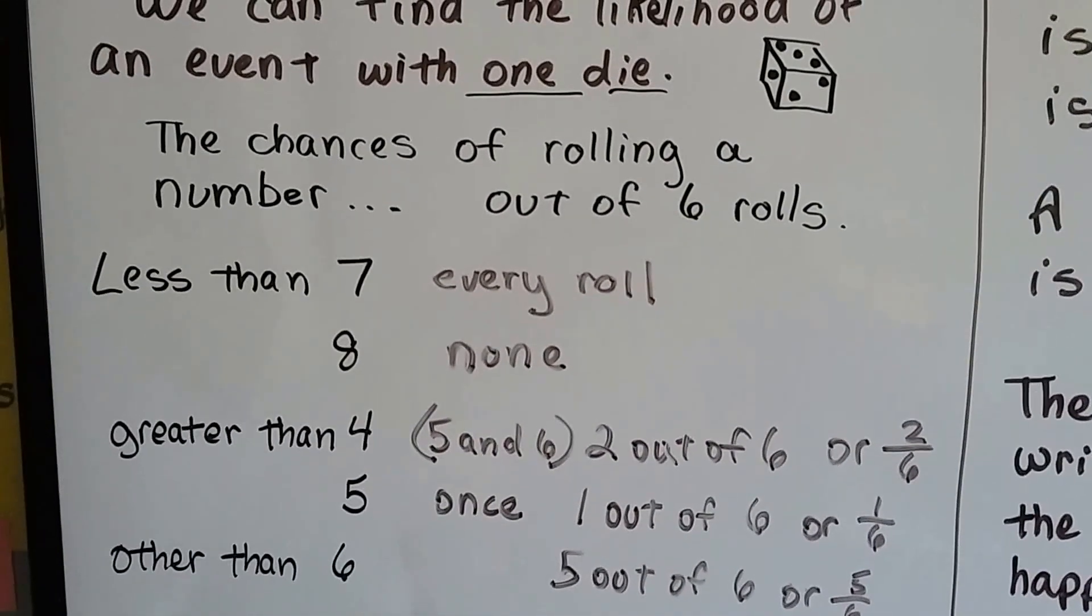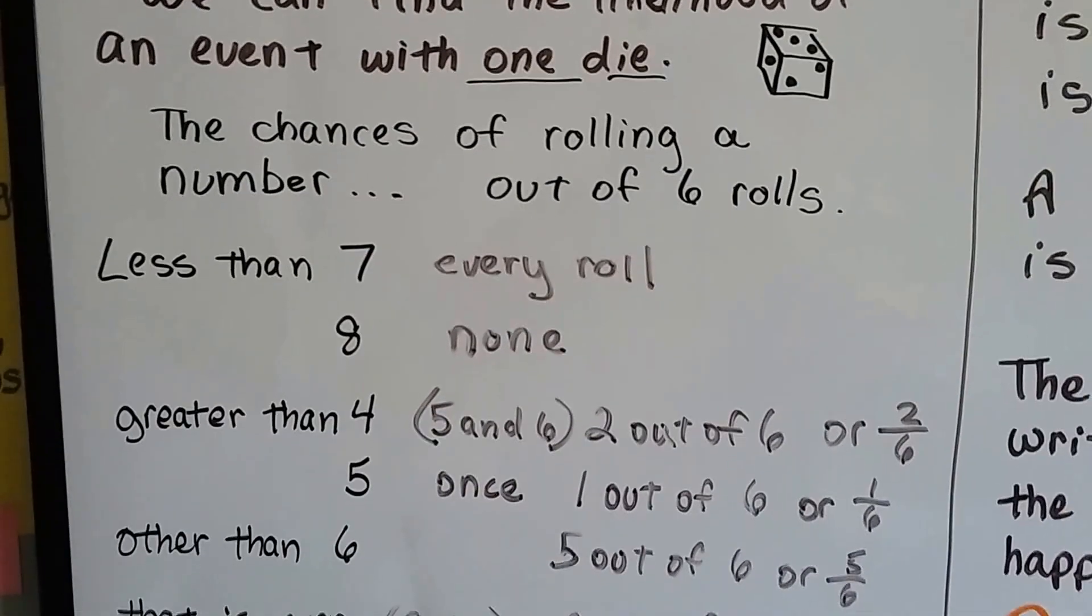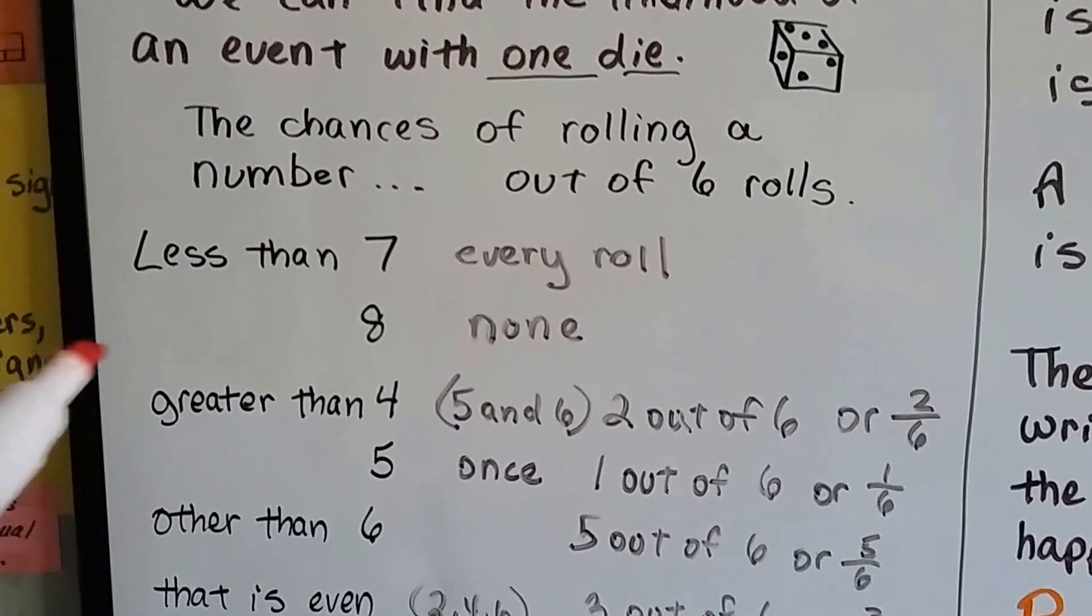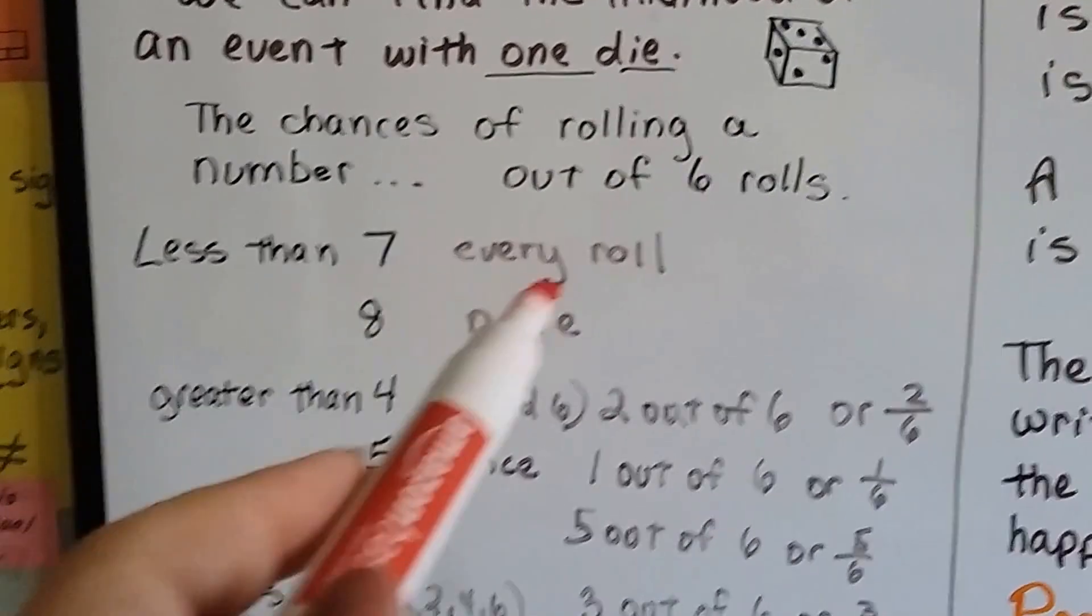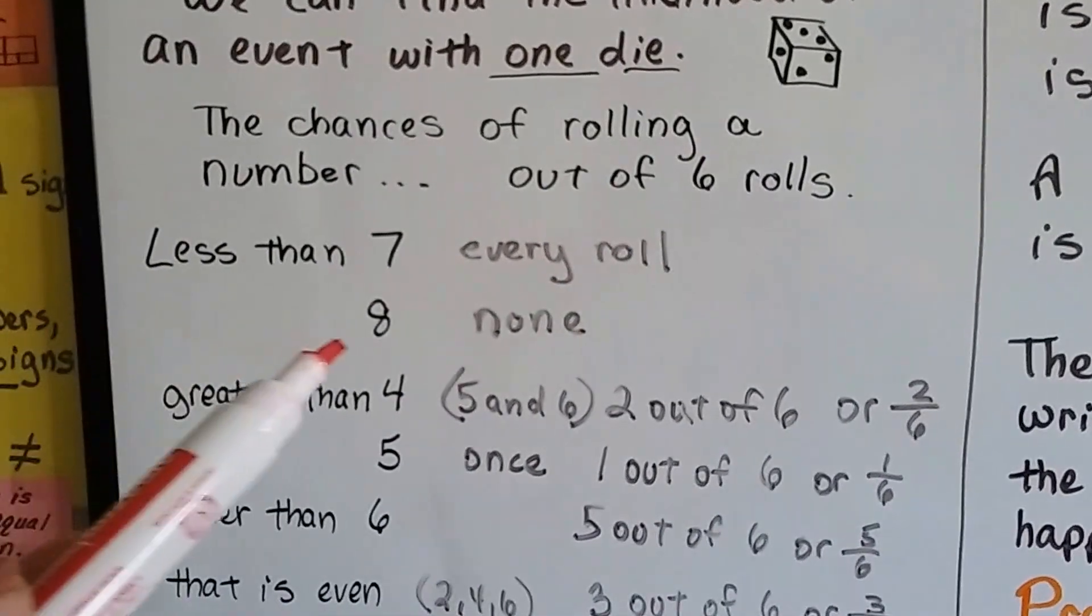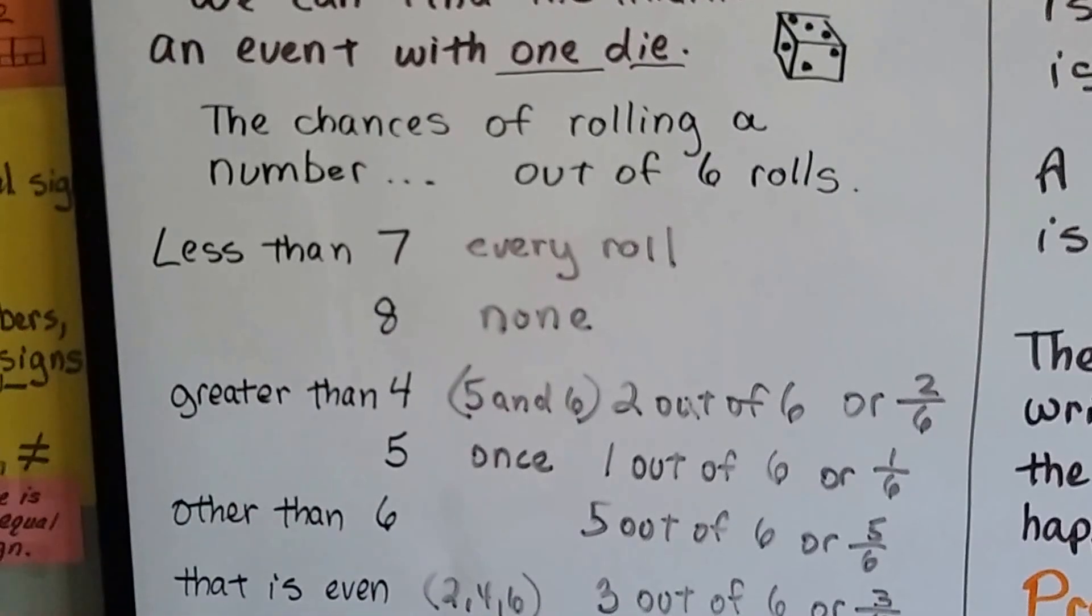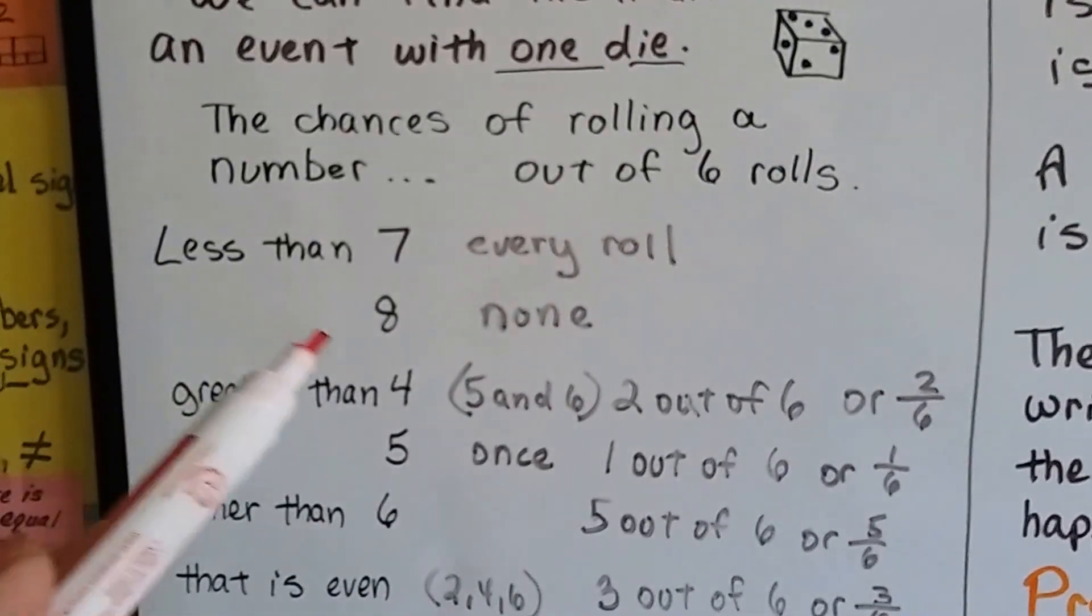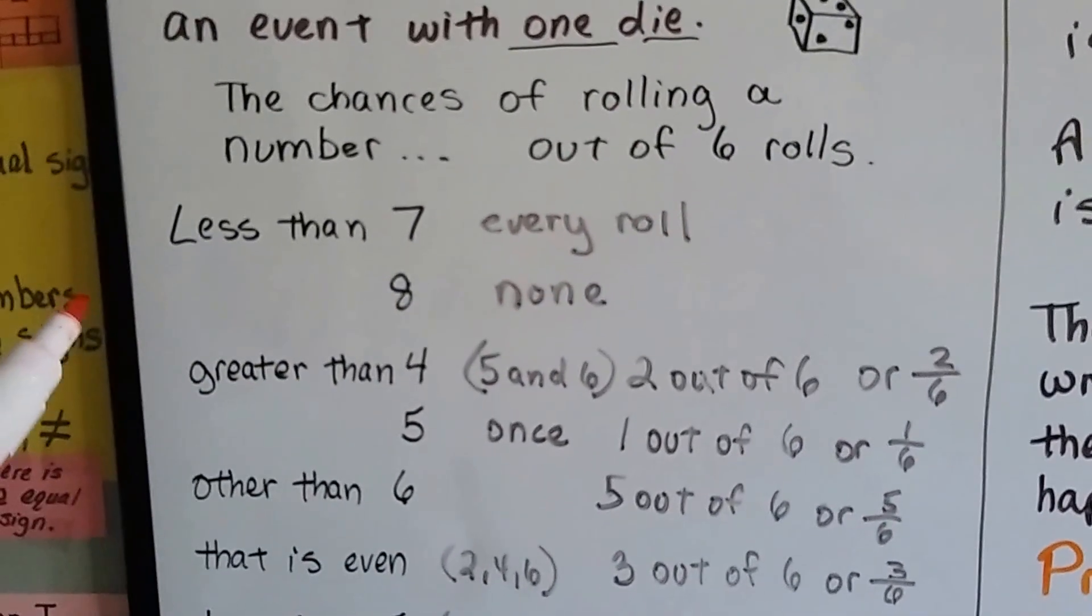Well, there's six numbers, there's six sides: one, two, three, four, five, six. So in six rolls, the chance of us rolling less than seven would be every roll, because every roll would be less than seven. The chance of rolling an eight would be none, because there's no way to roll an eight if it only goes up to six. That would be a zero chance.